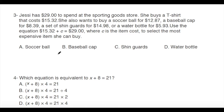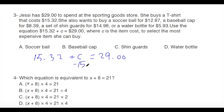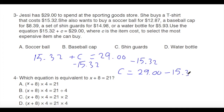We need to select the most expensive item she can buy. First, calculate c: since 15.32 plus c equals 29.00, subtract 15.32 from both sides using the subtraction property of equality. So c equals 29 minus 15.32, which equals 13.68.